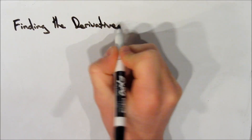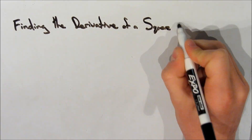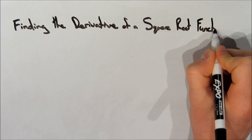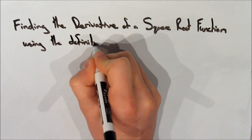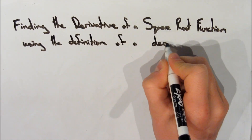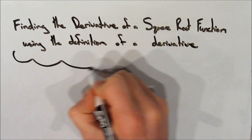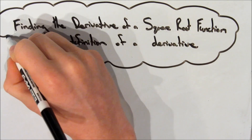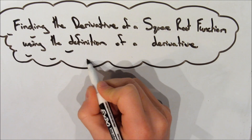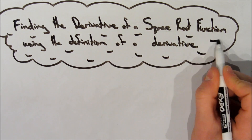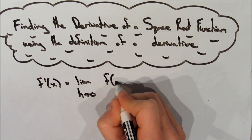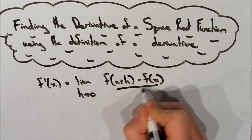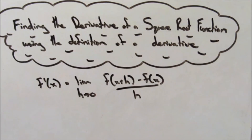Hi guys, today I'm going to continue with a couple of examples finding the derivative of a function using the formal definition of a derivative. In this video, I will be focusing on square root functions, and we're going to be using the same formula as before.